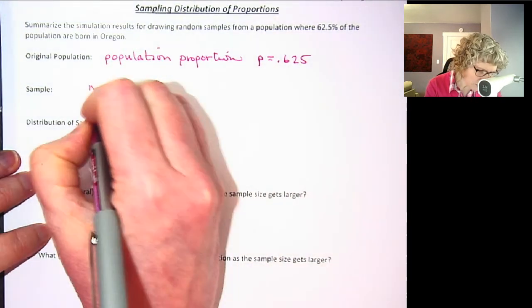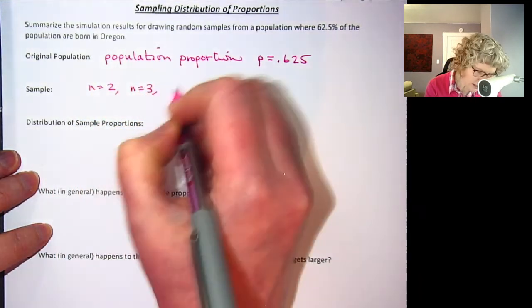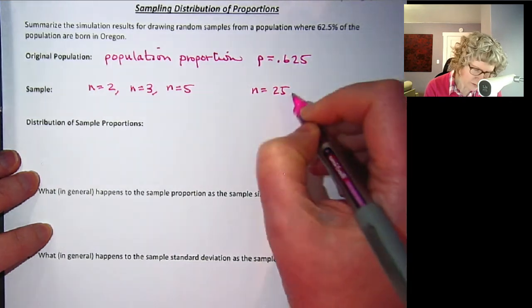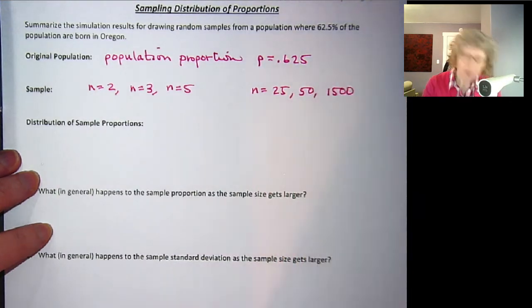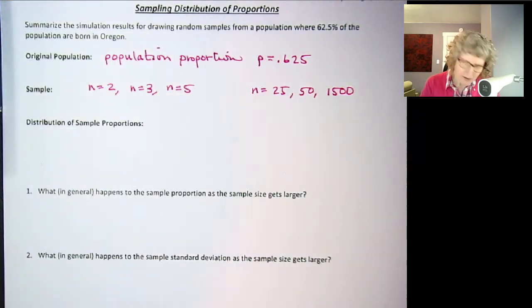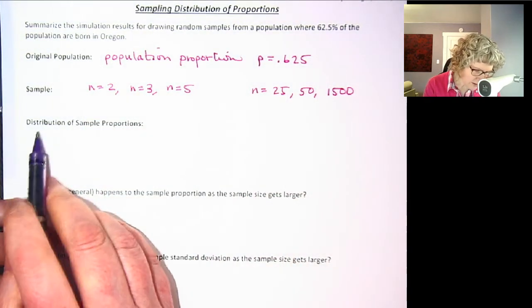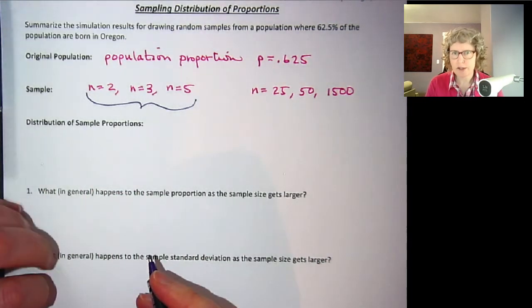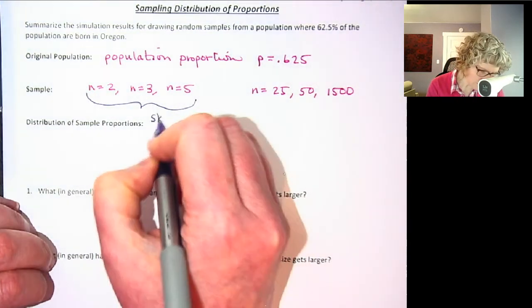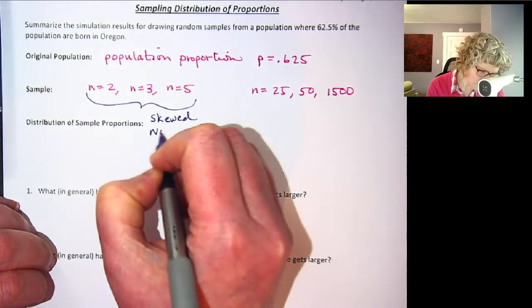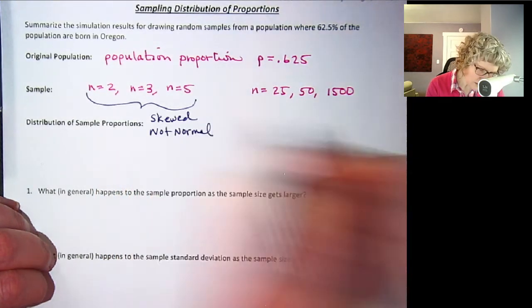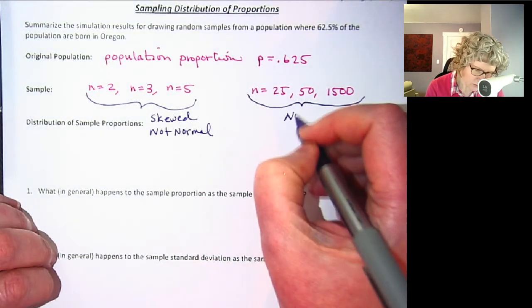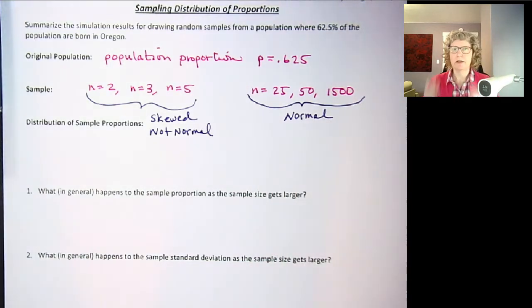So we did n equals 2, n equals 3, n equals 5 and then we also did n equals 25, I think we did 50 and 1500 something like that. So for the 2, 3 and 5 those were pretty skewed, they were not normal, but when we took bigger sample sizes these were normal. It looked like they had a normal distribution.